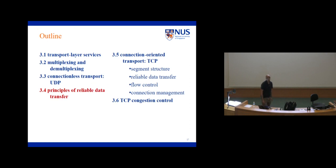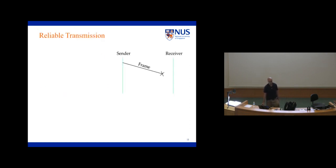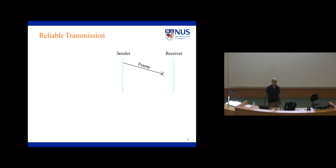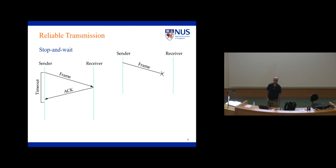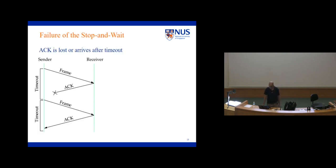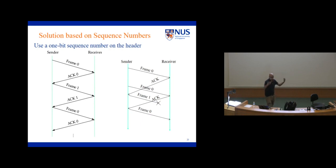We got started on principles of reliable data transfer. How do we build reliability? How will we recover from losses? One way is: if you send a packet, I want to know if you received it, so you send an acknowledgement back. If I don't get an acknowledgement within some specified period of time, I have a timeout and then retransmit the packet. In this stop-and-wait protocol, I only send one packet and wait. We also saw that we need to add sequence numbers to packets, and we should also add sequence numbers to the acknowledgements.